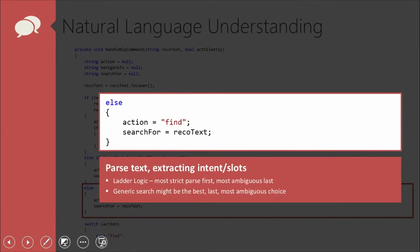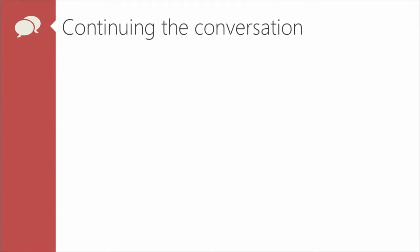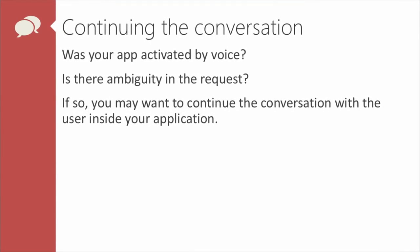Next, we have the most ambiguous case — we really don't know what you meant. So we're going to welcome you into the app, the action is find, and we go ahead and search for whatever it is you said. Even if it's complete gibberish, you can type it into MSDN online or into this app and do a generic search for it.